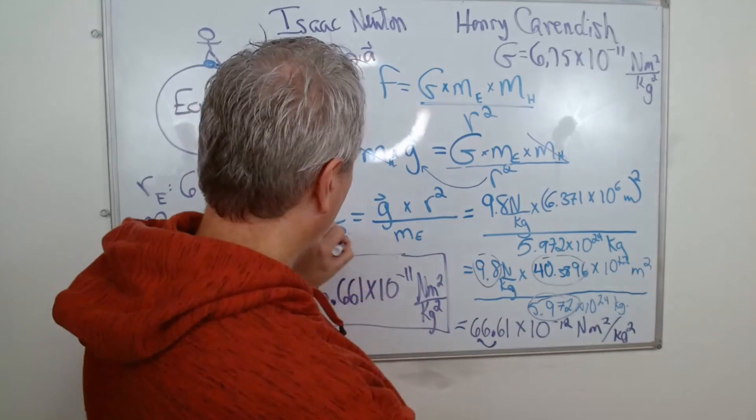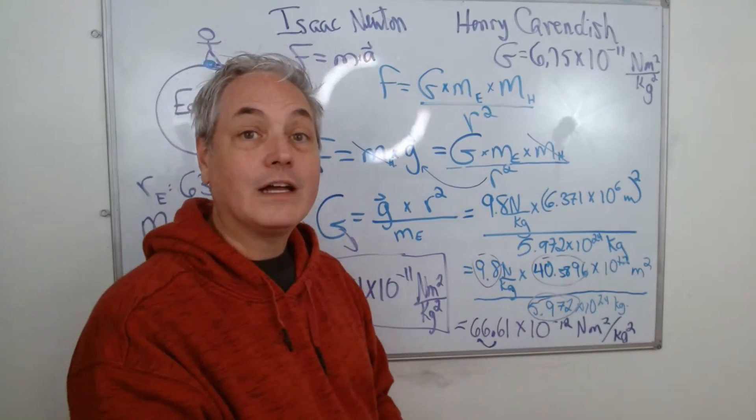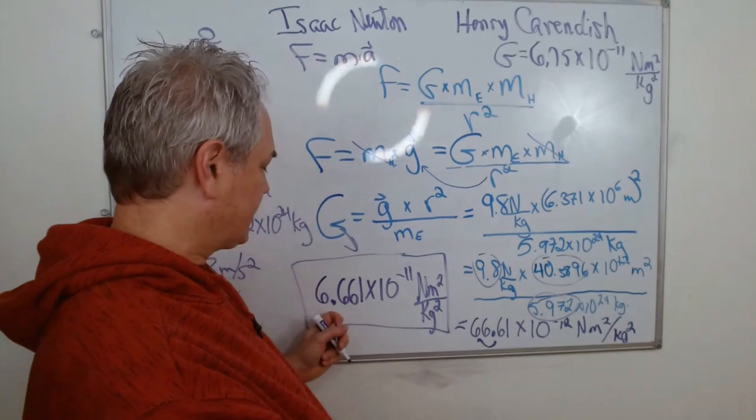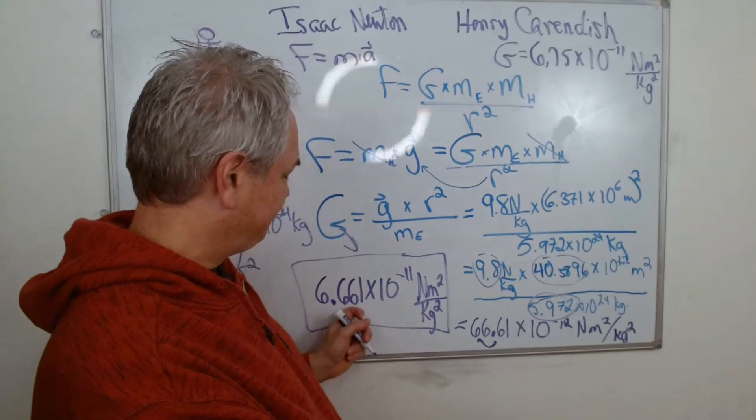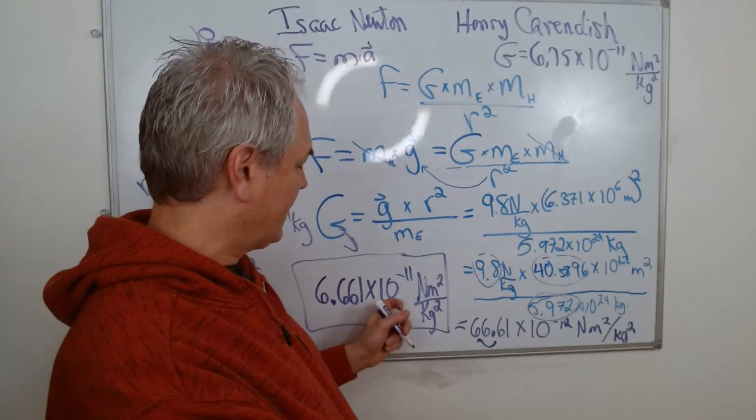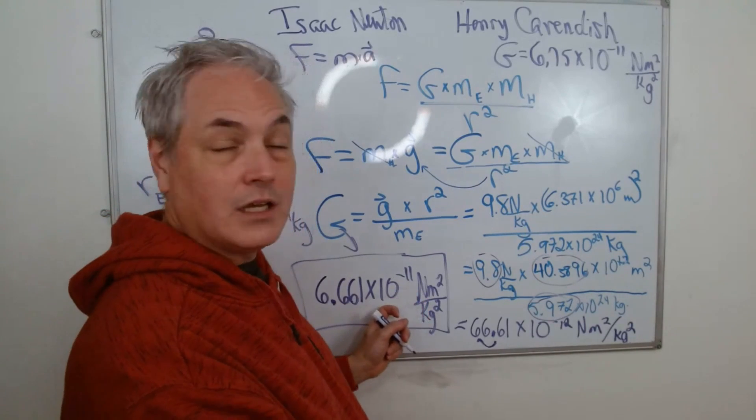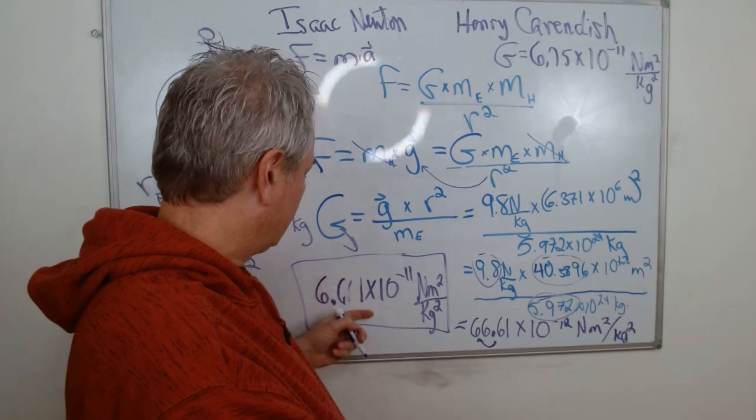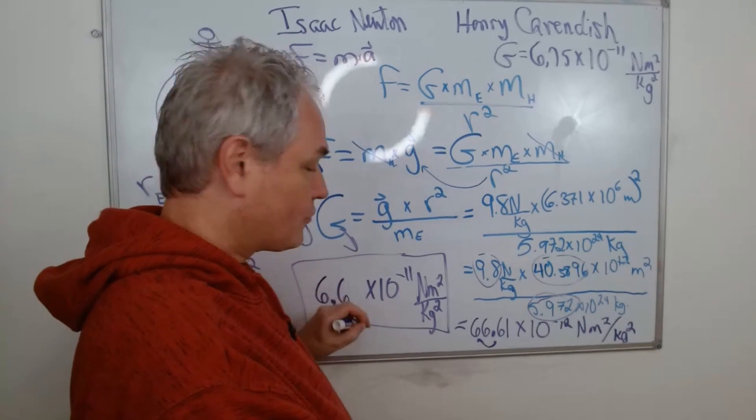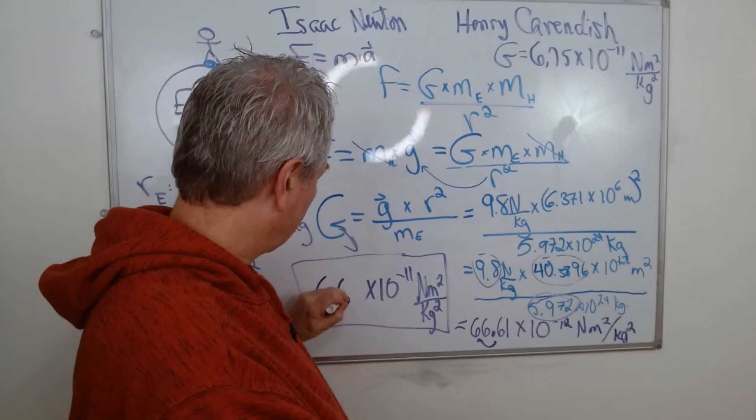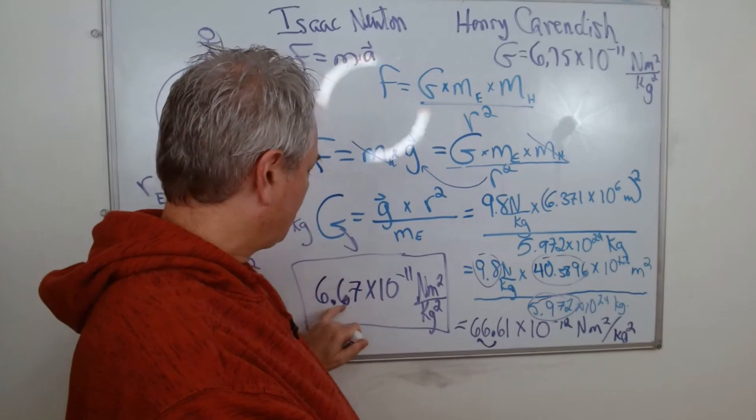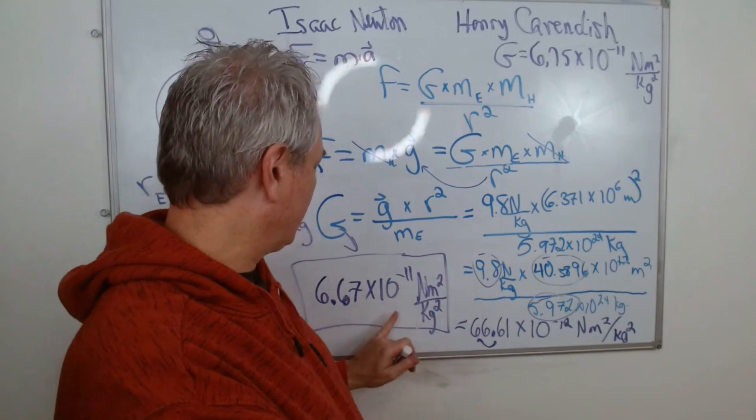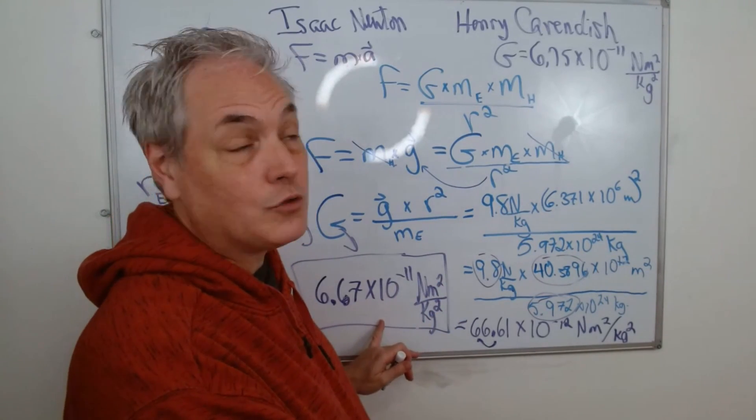And this will be the value of G. Now the actual value that people are using when they do calculations is 6.67, very close here, times 10 to negative 11, knowing that this number is more or less the number accepted. So we have, let's put it this way, I was answering questions for students last week: 6.67 times 10 to the negative 11, newton meter squared over kilogram squared. This is the number that we're using.